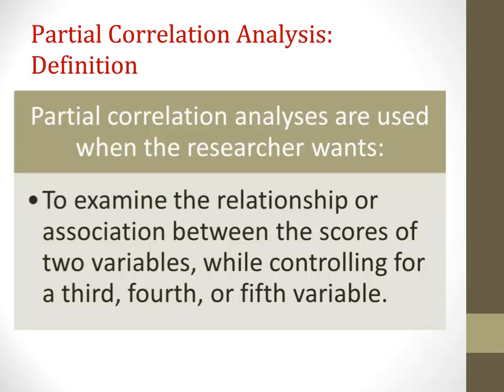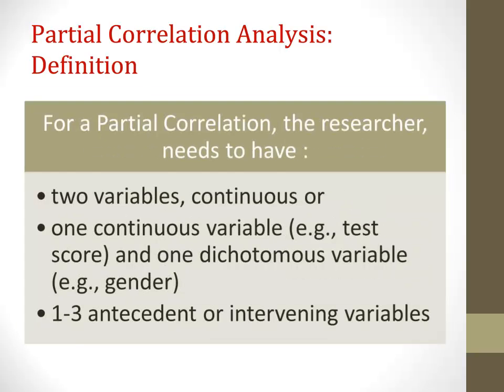A partial correlation is used when a researcher wants to know about the relationship between variables one and two while controlling for variables three, four, or five. For a partial correlation, the researcher needs to have two variables that are continuous, or at least one continuous variable and one dichotomous variable, and one to three antecedent or intervening variables — that is, the variables the researcher wants to control for.